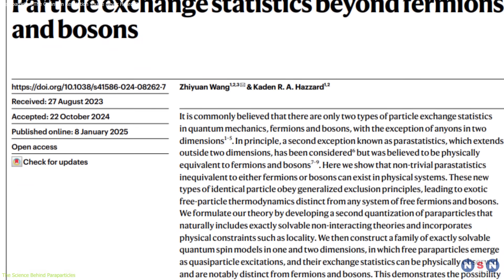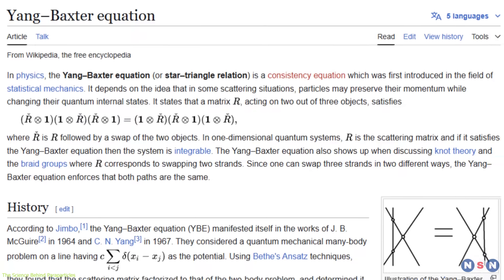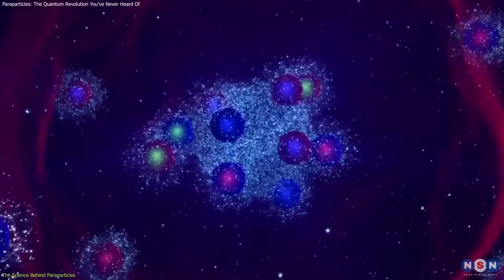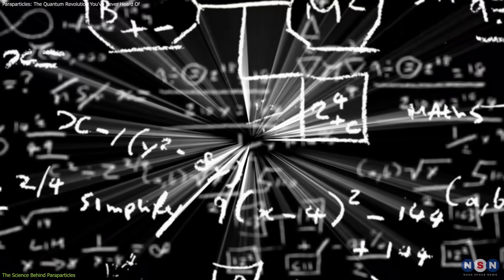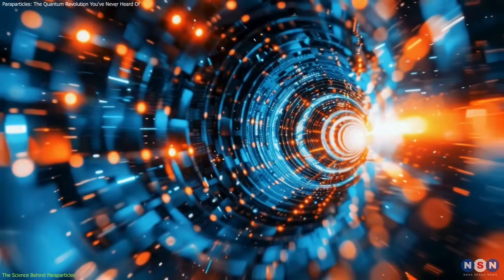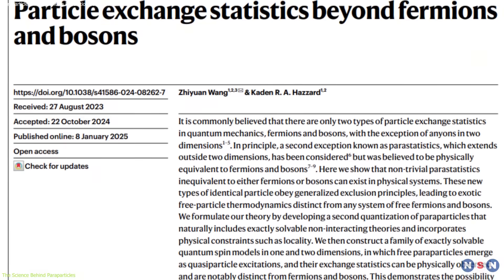Hazard and Wang revisited the concept using cutting-edge mathematical tools. They relied on something called the Yang-Baxter equation, which helps describe how particles behave when they swap places. They also used Lie algebra and tensor network diagrams, fancy tools for understanding symmetry and quantum states.